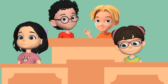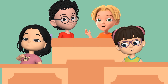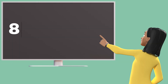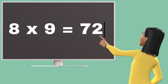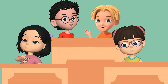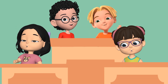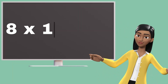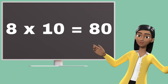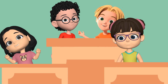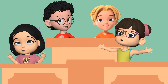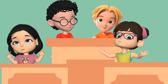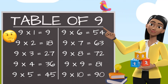Eight eights are sixty-four. Eight nines are seventy-two. Eight nines are seventy-two. Eight tens are eighty. Table of 9.